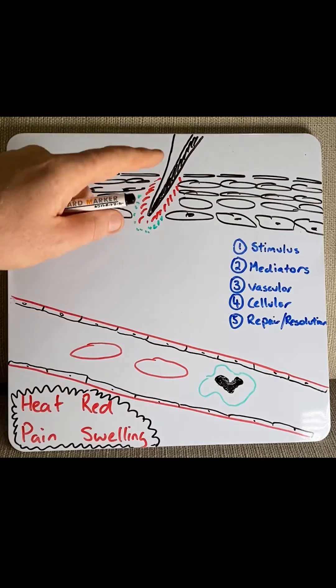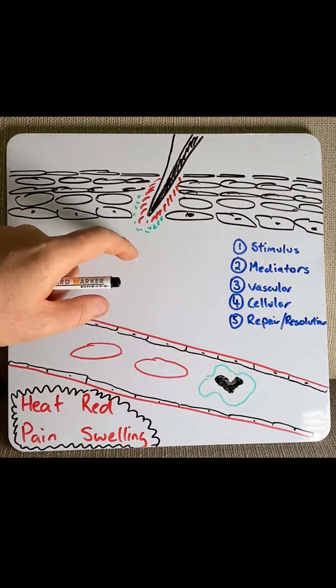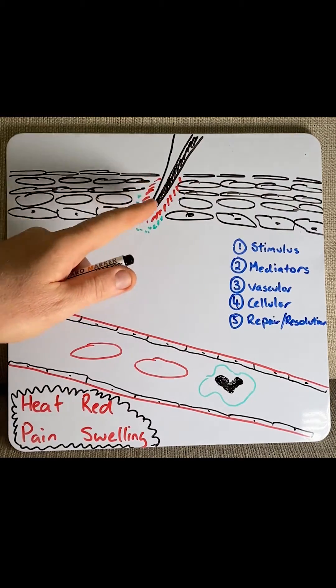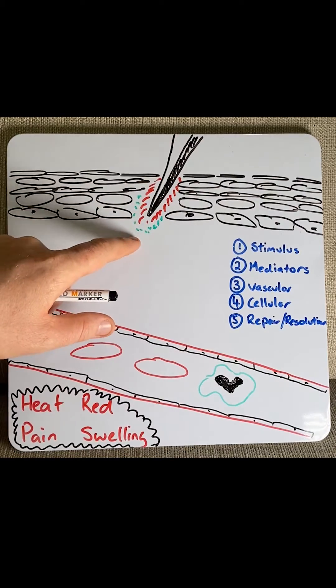In this case we've got a thorn that has penetrated through the skin. This would be the stimulus, causing both necrosis of cells that are immediately damaged as well as introducing pathogens into the tissue.